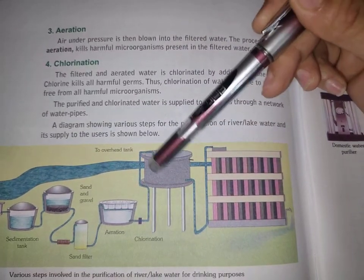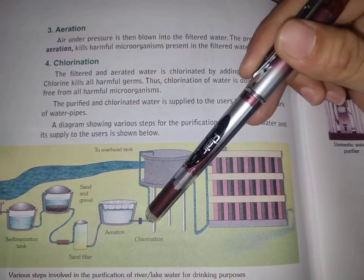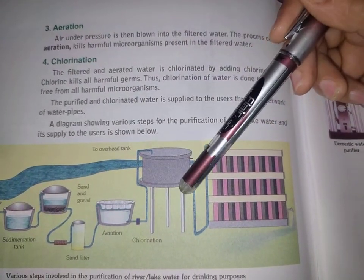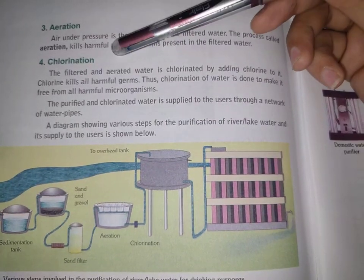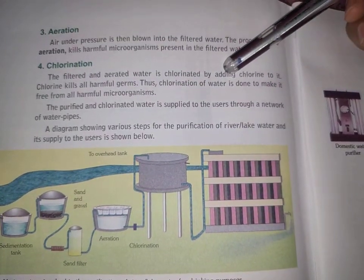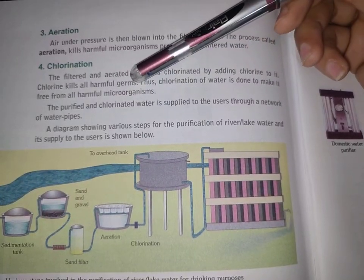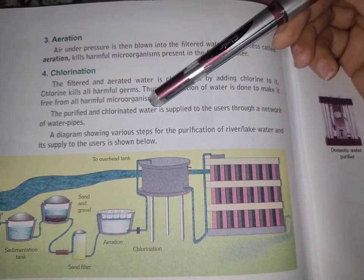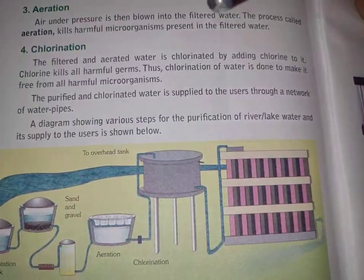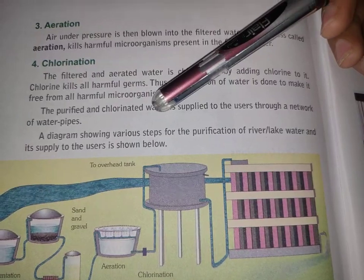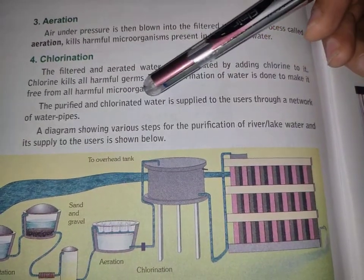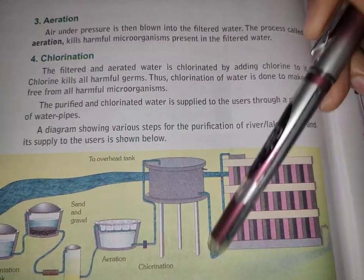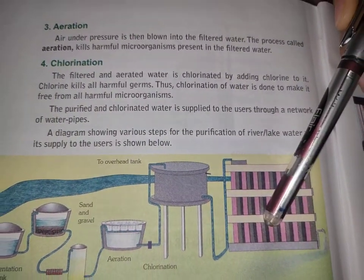Then the last step is chlorination — chemical treatment of the water. In chlorination, we add chlorine tablets. Chlorine kills the harmful microorganisms. So the filtered and aerated water is chlorinated by adding chlorine to it; chlorine kills all harmful germs. Thus, chlorination of water is done to make it free from all harmful microorganisms. Then the purified and chlorinated water is supplied to users through a network of water pipes.